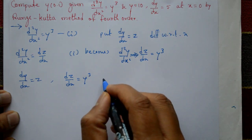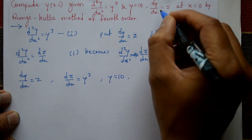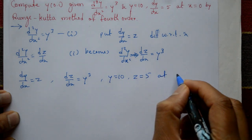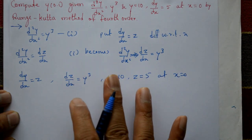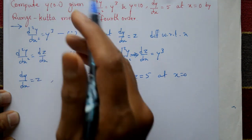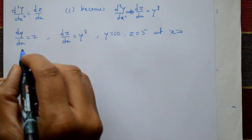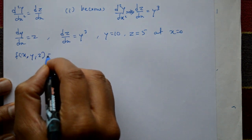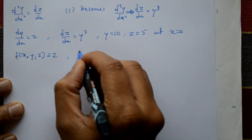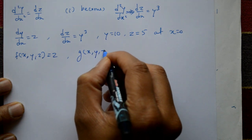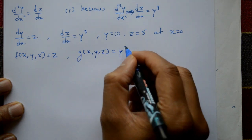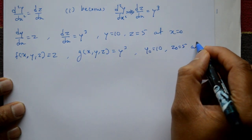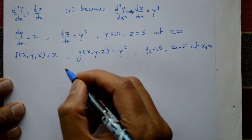Since dy/dx = z, we have z₀ = 5 and y₀ = 10 at x₀ = 0. We need to calculate y(0.1). The functions are defined as f(x, y, z) = z and g(x, y, z) = y³.